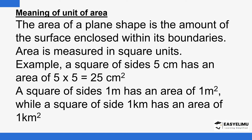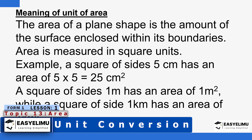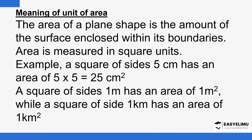So what does it mean when you talk about area? Area is defined as the amount of surface enclosed within a given boundary. So if you have a shape or a plane figure, the amount of surface that is enclosed within the boundaries of that figure is what you call area. For example, if you have a figure with boundaries A-B, A-C, and B-C — three boundaries — the amount of surface enclosed within those three boundaries is what we are calling area.